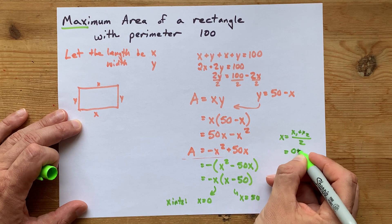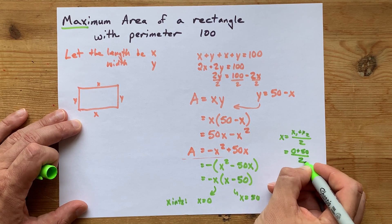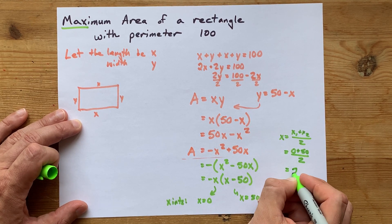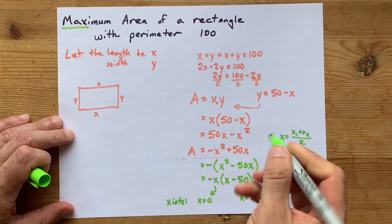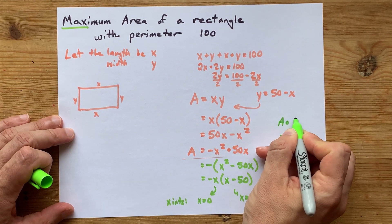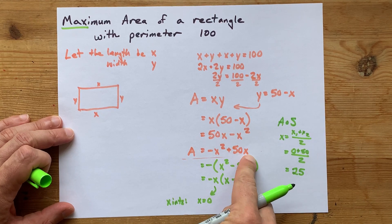Some teachers will have you write x equals x1 plus x2 over 2. Again, you're just taking your two x-intercepts, adding them up and dividing by 2 or averaging them. You get x equals 25. That is the axis of symmetry for this parabola, the area.